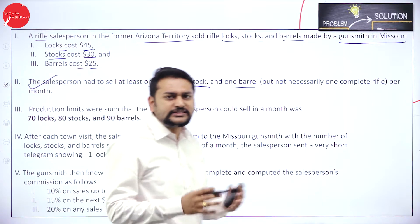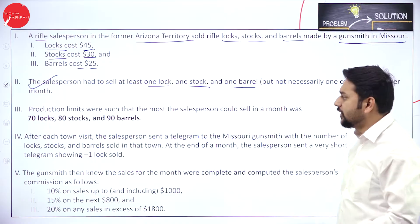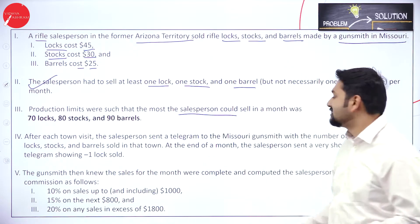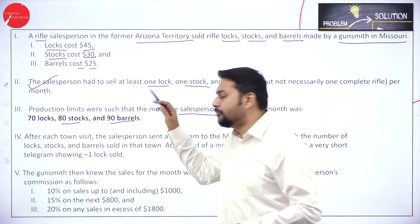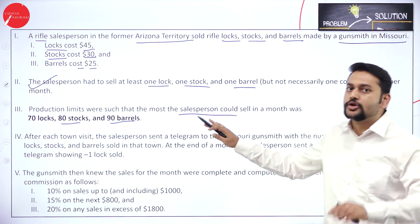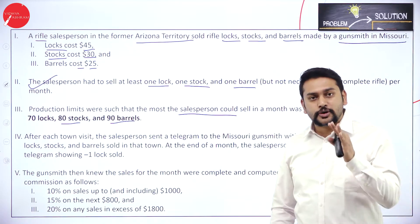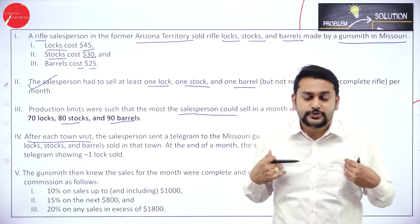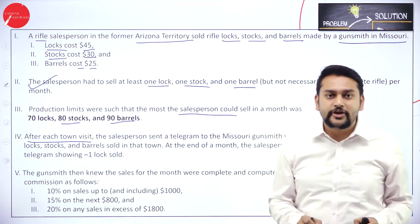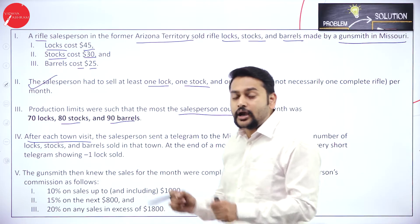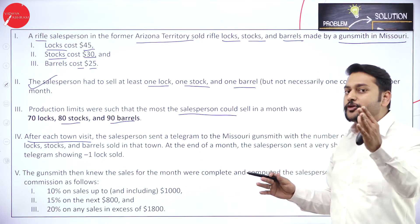In the third point, they speak about the production limit. The most a salesperson could sell in a month was 70 locks, 80 stocks, and 90 barrels. After visiting each town, the salesperson — acting as the salesperson — will send a short telegram to the manufacturer saying how many stocks, locks, and barrels have been sold.